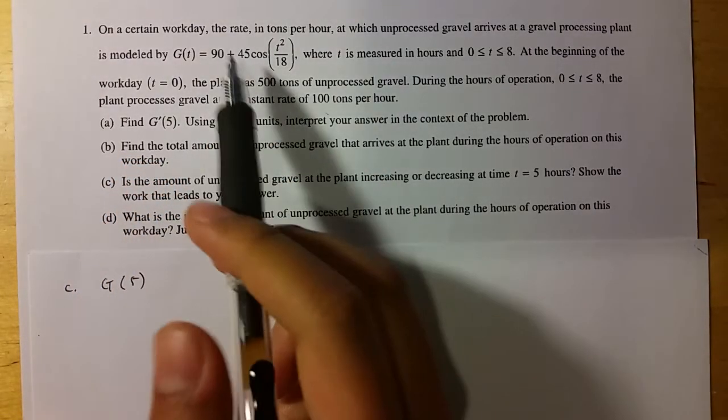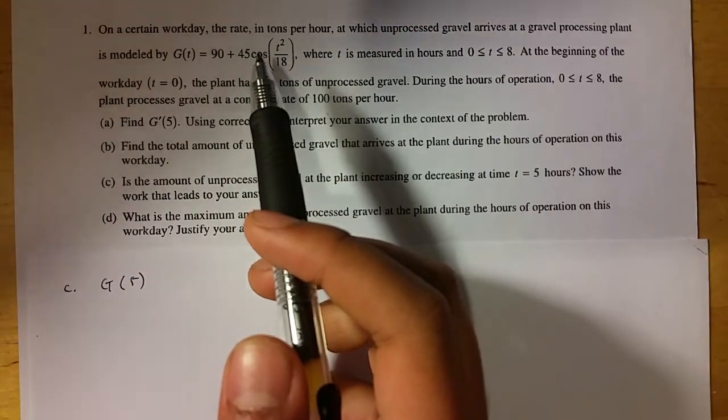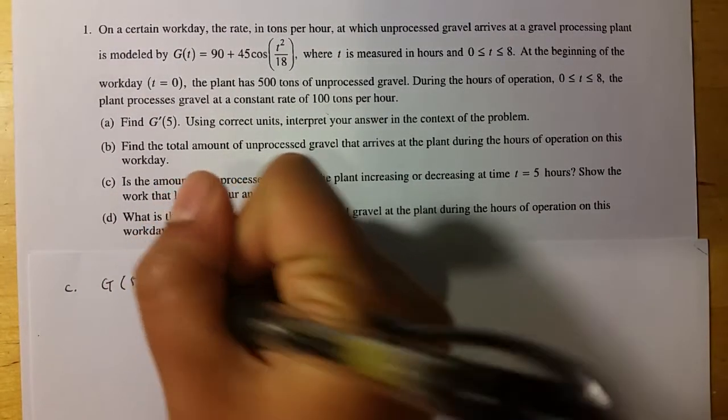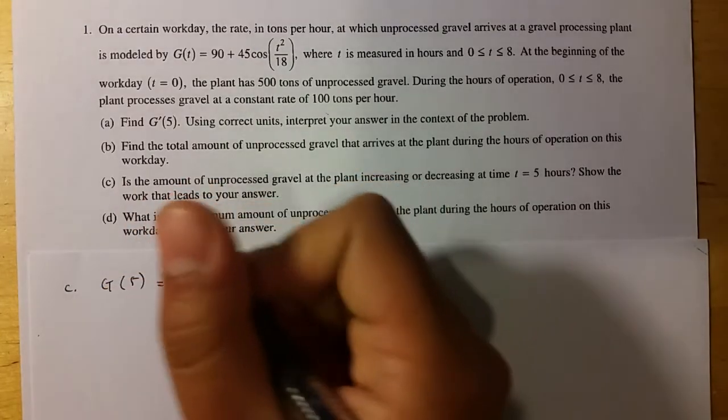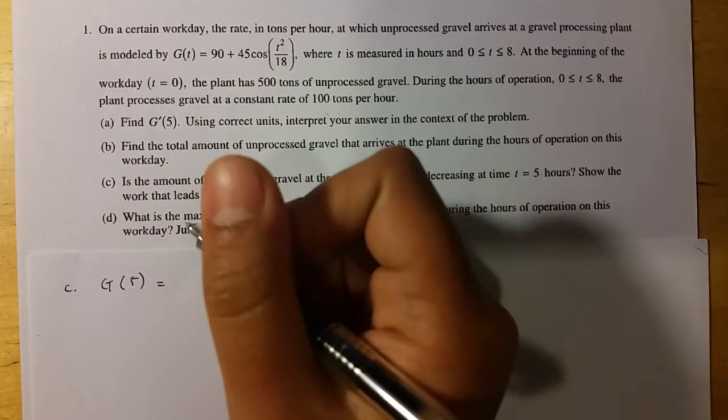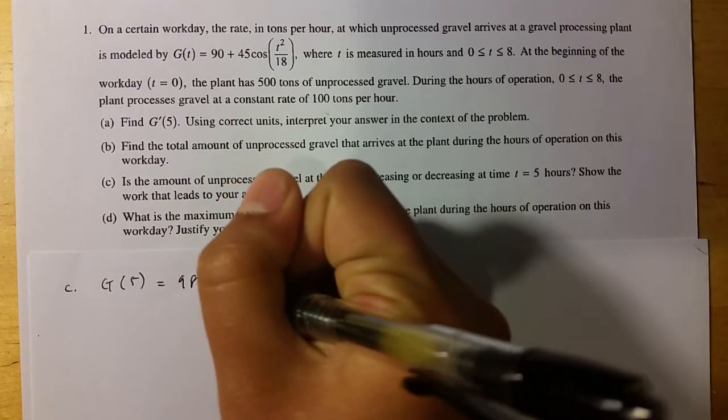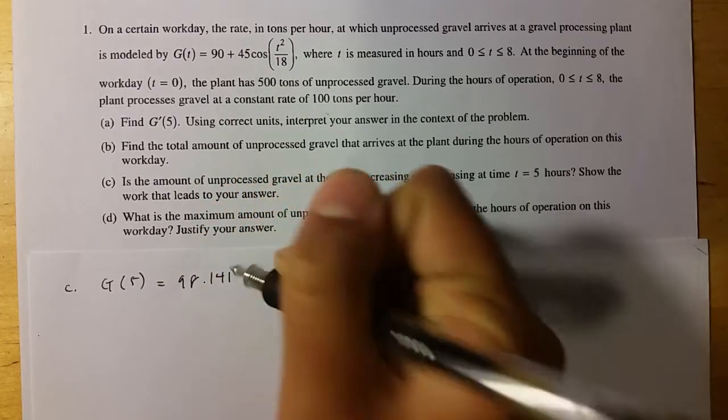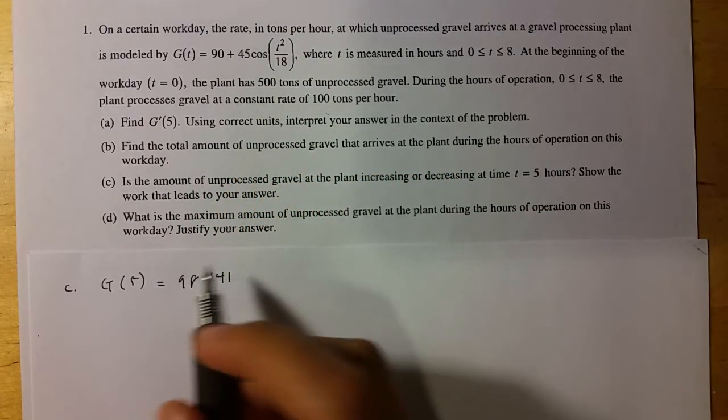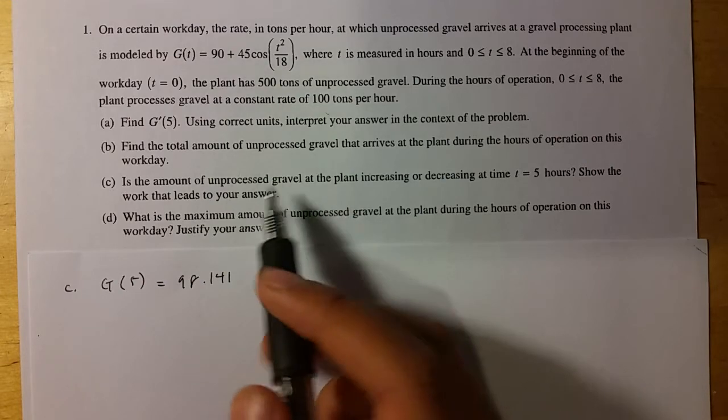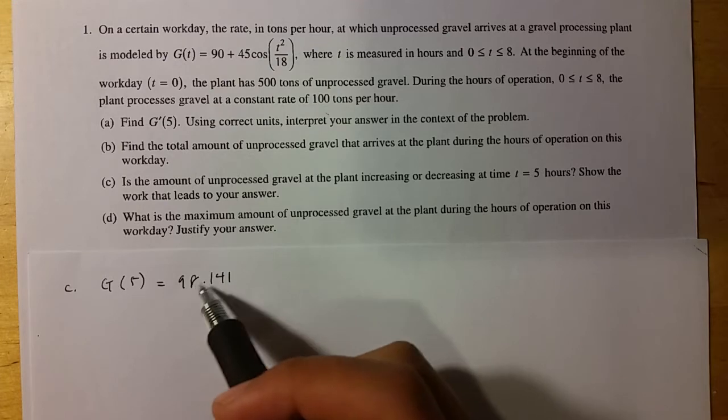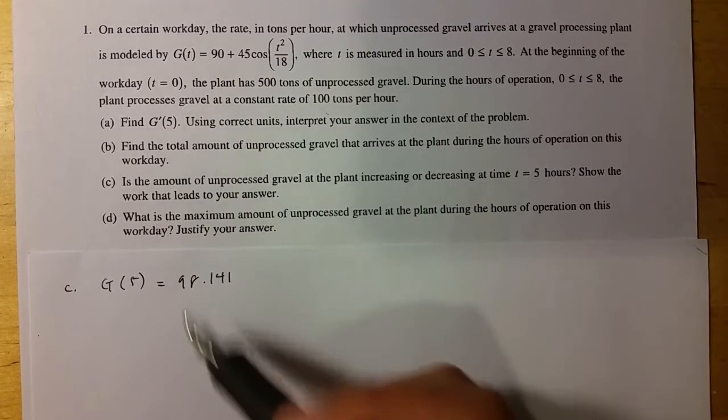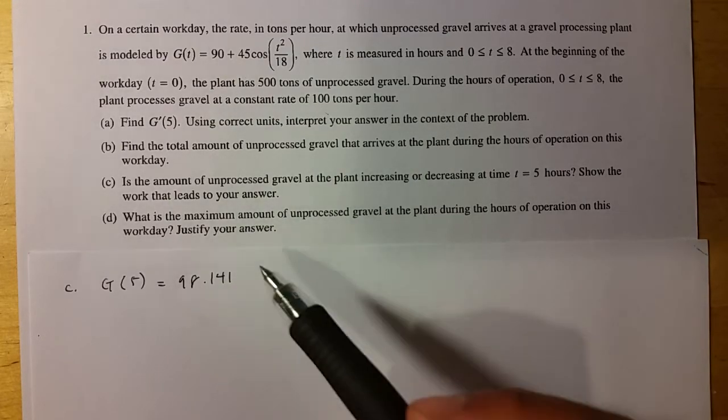So it's just g of 5, because g is the rate, right? And g of 5 equals, and you can just plug that into your calculator. I hope you know how to do that. But you get 98.141. And actually, that's not the answer, because it's asking for the amount of unprocessed gravel. And this is the rate at which it's coming in. But of course, that should always be positive.